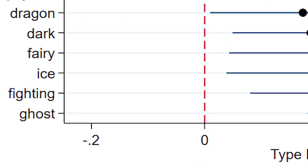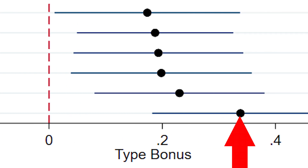Most types don't have a bonus. The ones that do are clearly Dragon, Dark, Fairy, Ice, Fighting, and Ghost. Ghost Pokemon actually have the largest bonus — if you are a Ghost Pokemon, you're almost certainly being included in this game. This result on types surprised me a little, because this is supposed to be kind of the steampunk version of Pokemon, so I thought you would see more Steel and Electric types to reflect that steampunk nature. But we're not seeing that at all. For some reason, there's a huge favorite going to Ghost Pokemon, which kind of surprises me.